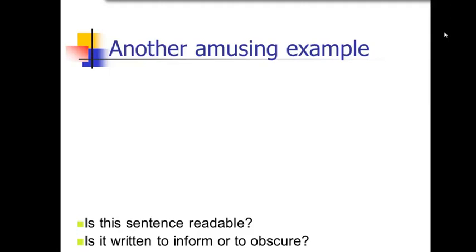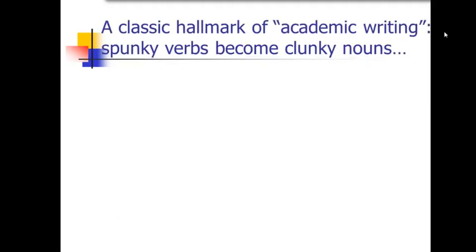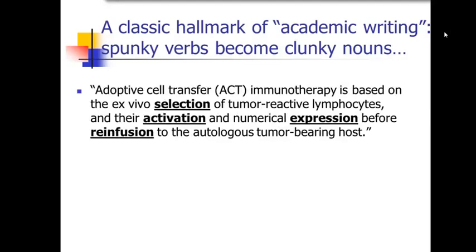We really want to write in a way that's to inform. We certainly don't want to obscure the message. And I'm going to point out one feature that's common to both of those two passages. In both examples, they did something that's very common in academic writing: they took some nice, spunky verbs — and verbs really move the sentence along — and turned those verbs into clunky nouns. For some reason this has become very common in academic writing. People turn lots of verbs into nouns, which makes reading a lot harder because verbs drive sentences along and nouns slow them down.